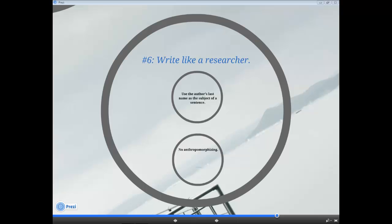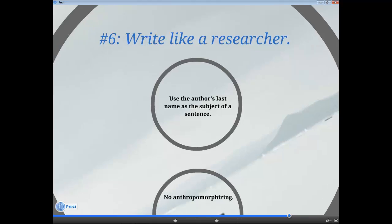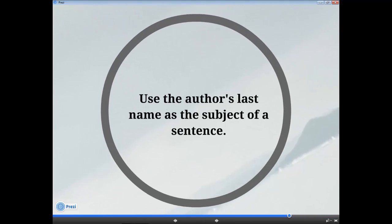Step number six: write like a researcher. Use the author's last name as the subject of the sentence. For example, Smith investigated the role of parental involvement in student achievement. Furthermore, when citing sources, use only the author's last name. Omit first initials, names, Mr., Ms., Doctor, etc.